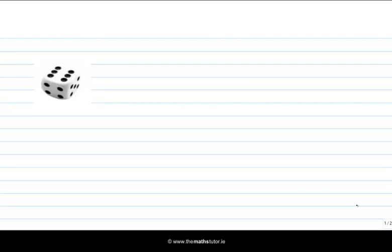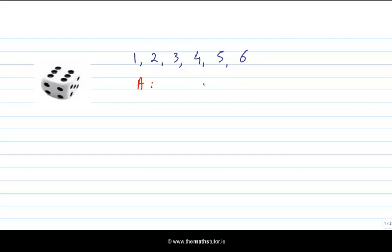We'll look at a roll of a fair die. The sample space lists all the possible outcomes: one, two, three, four, five, or six. Let's pick a pair of events to examine conditional probability. Our first event — shown in red — is that we roll at least a four. We can pick that out in the sample space and circle those outcomes in red: four, five, or six.